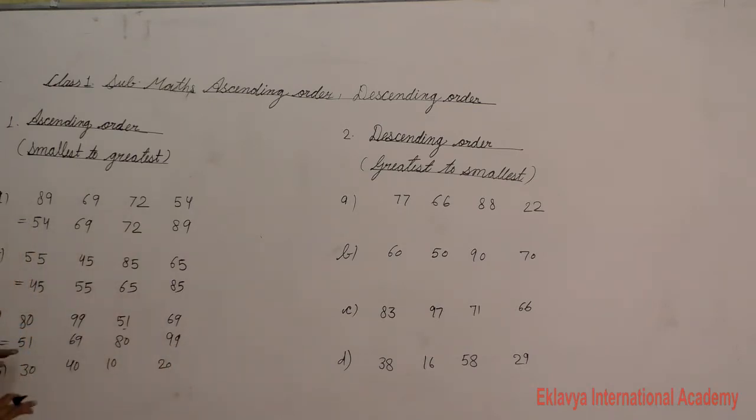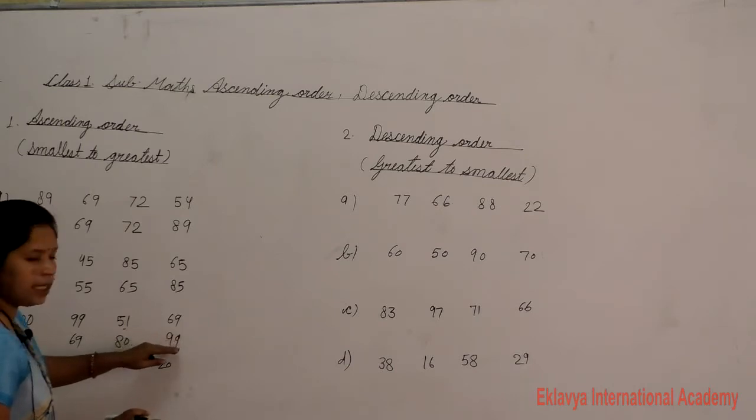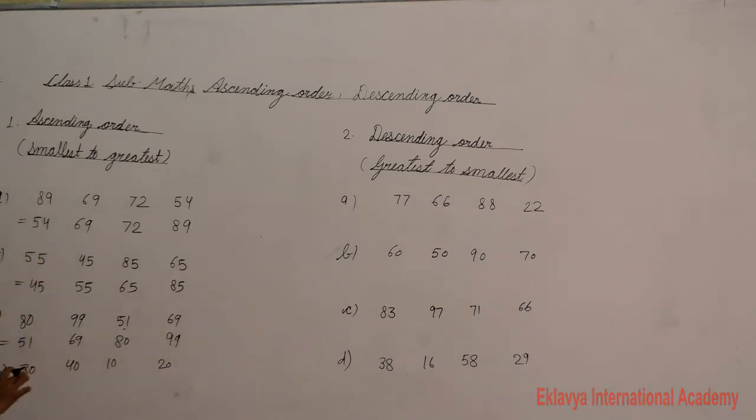So the ascending order is: 51, 69, 80, and 89. That completes this ascending order.